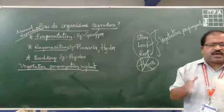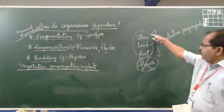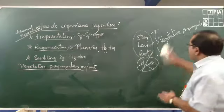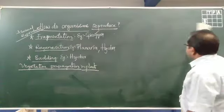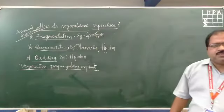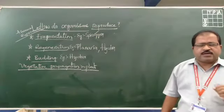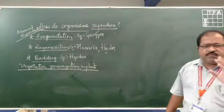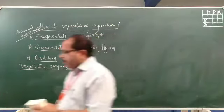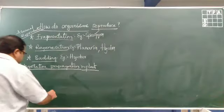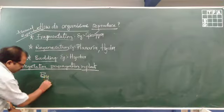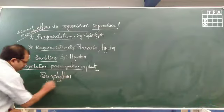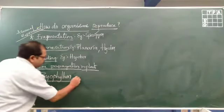In vegetative propagation, only one single organism participates, and any of the plant's organs can participate. There are some methods of vegetative propagation like layering and grafting. One method is vegetative propagation by leaves — the example for this is Bryophyllum.